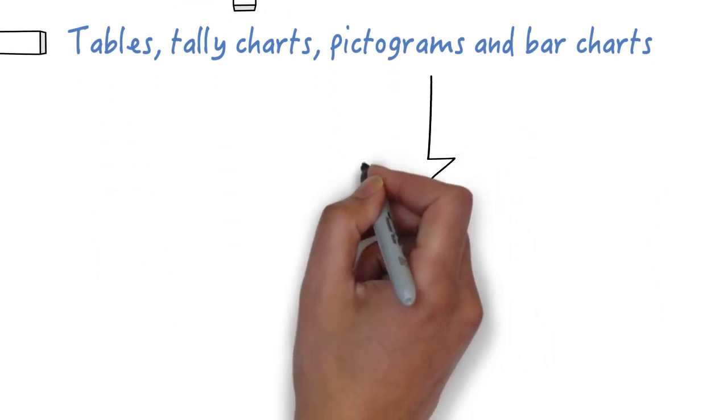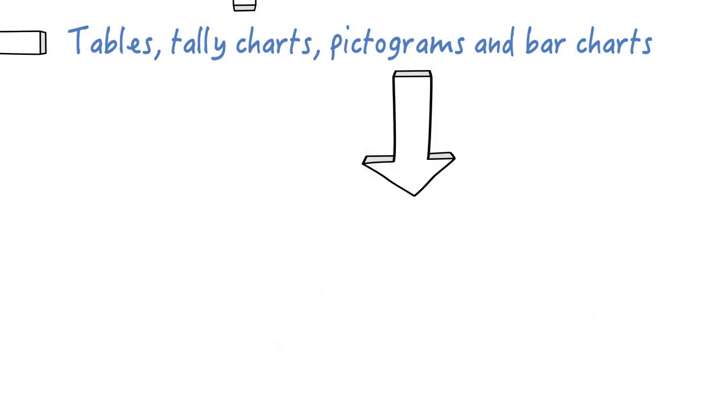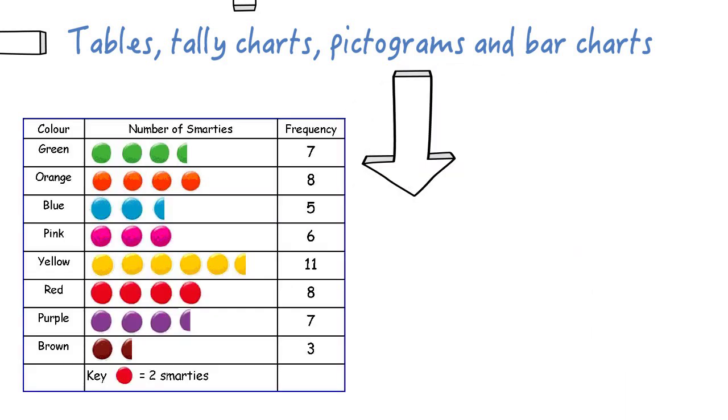Pictograms use pictures of the information. It looks like a tally chart but with pictures instead of lines. The difference is that each picture doesn't always mean one. You need to look at the key to help you count. In this pictogram about smarties each smarty means two people so you count in twos. Look closely to find the key.